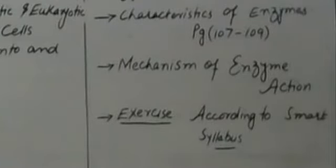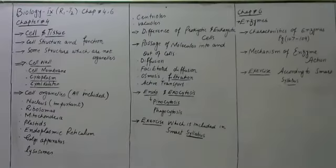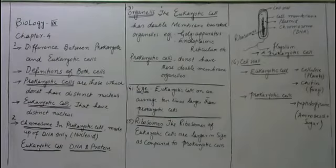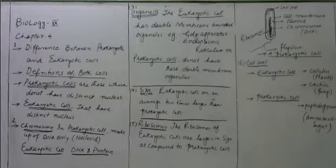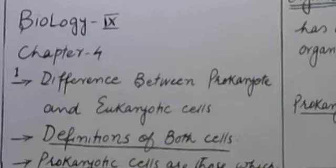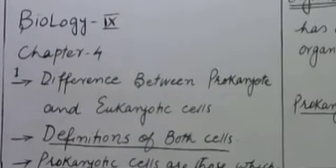That's all about this review of chapter 4 and chapter 6 — kindly memorize this well, it is very important. Today I will discuss the topic: the difference between prokaryotic and eukaryotic cells, from chapter 4, biology 9th. This is a very important long question.